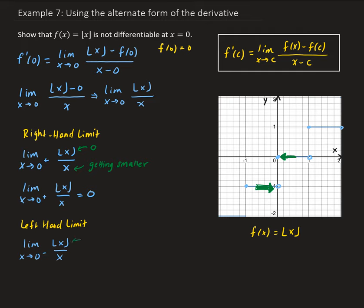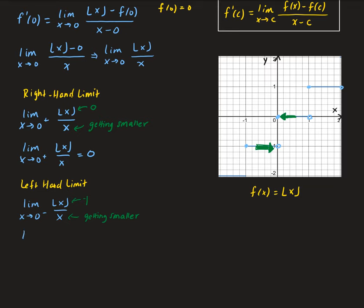As x is approaching 0 from the left, for the floor function, the numerator is going to be minus 1. At the same time, the denominator is getting smaller. So we have minus 1 on top — a constant divided by something getting smaller. The overall result is that this limit is going to approach infinity. Keep in mind, it's negative 1 on top and x is approaching 0 from the left, so x is a negative value. So we get a negative divided by a negative, meaning this is going to be positive infinity.